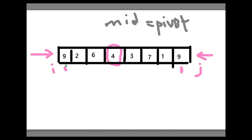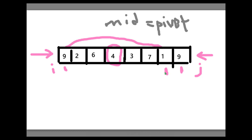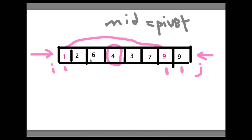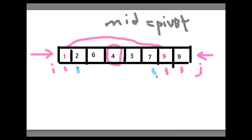In this case, 9 is greater than 4 — yes, stop here, come to the right side. 9 is less than 4 — no, change the pointer. 1 is less than 4 — yes, swap 9 and 1. Now increase the pointer at the left hand side and decrease the pointer at the right hand side.